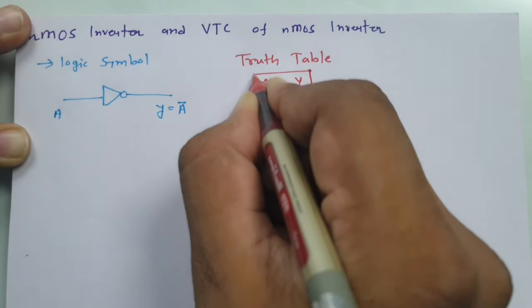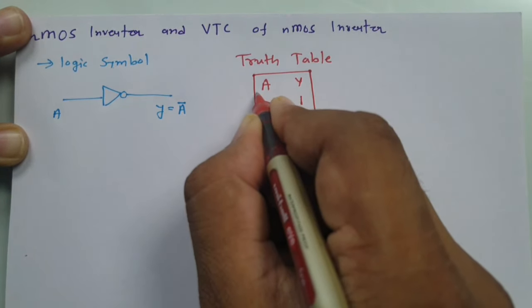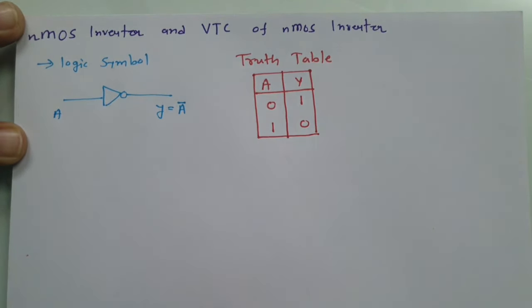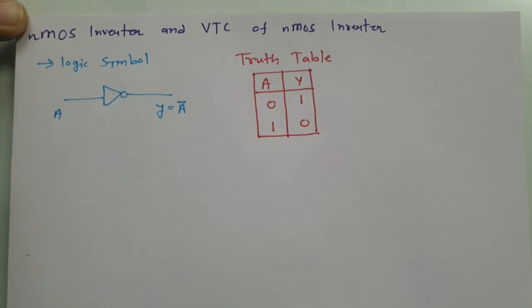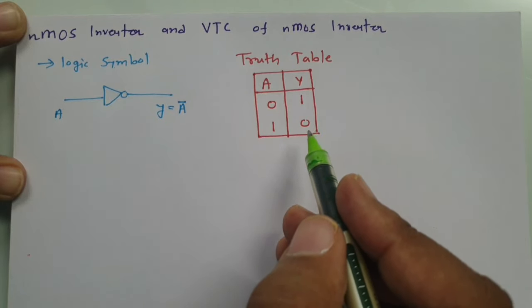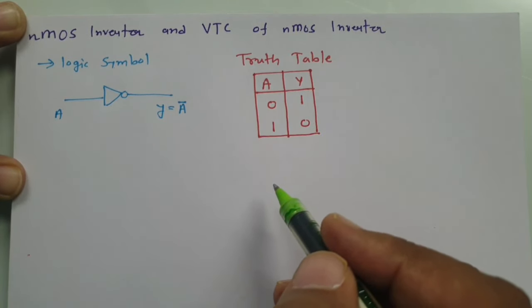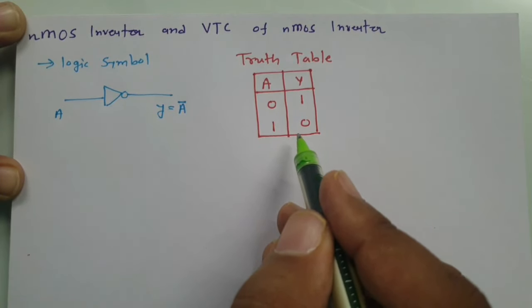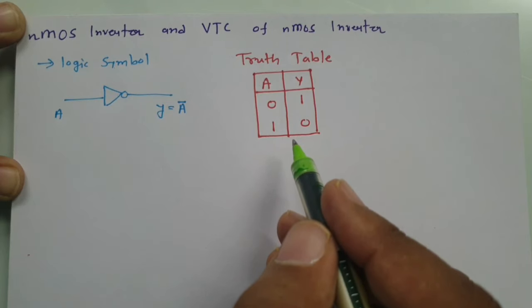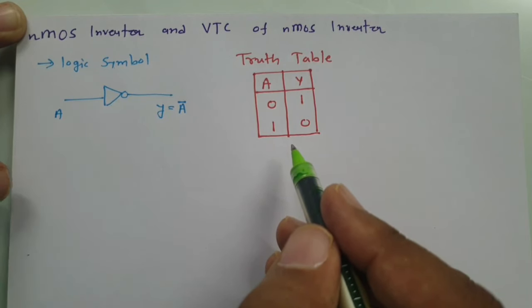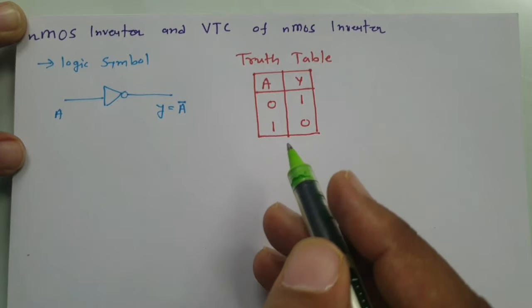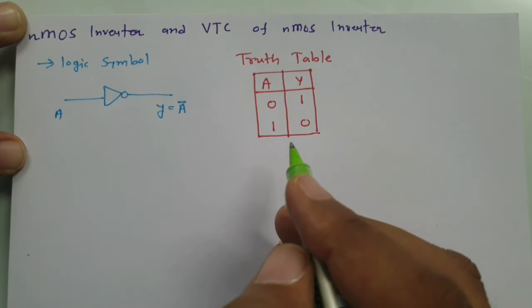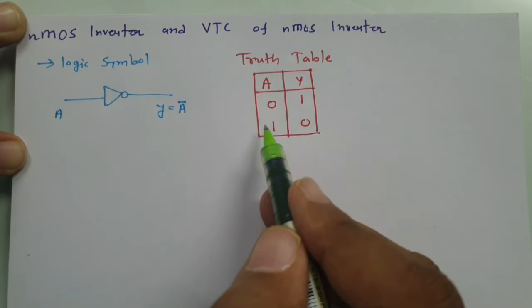That is how the truth table works with the ideal inverter. When we talk about circuit functioning, logic zero and logic one need to be considered in terms of voltage. If we consider logic one as high voltage — let us say VDD — and logic zero as low voltage — let us say ground — then we can perform this operation in terms of circuits.